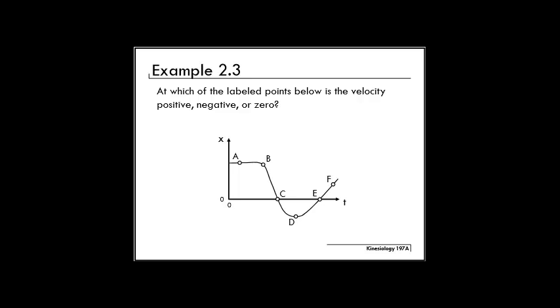In this video, we will solve example 2.3. In example 2.3, you're given a graph of position versus time with six labeled points on the graph, and you're asked questions about the velocity at those six points. You're asked to state whether the velocity is positive, negative, or zero.